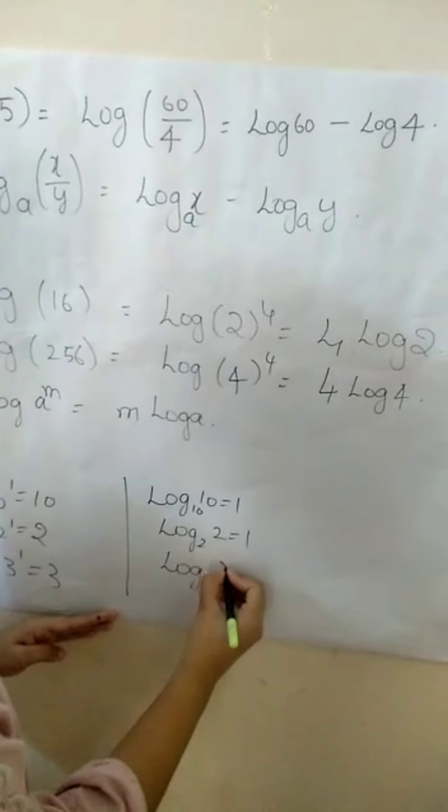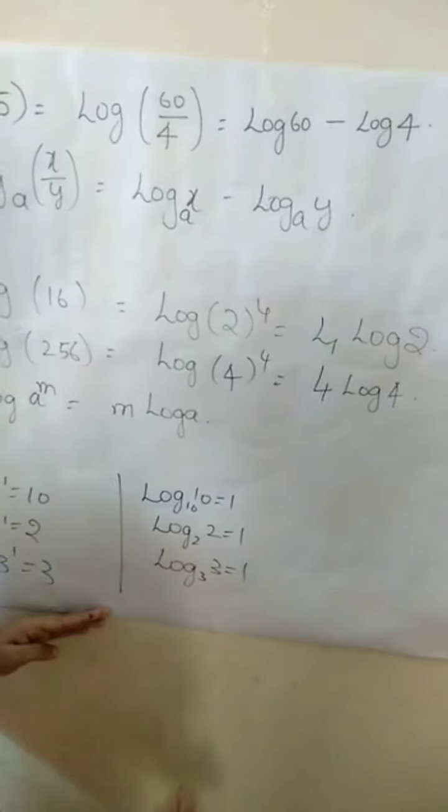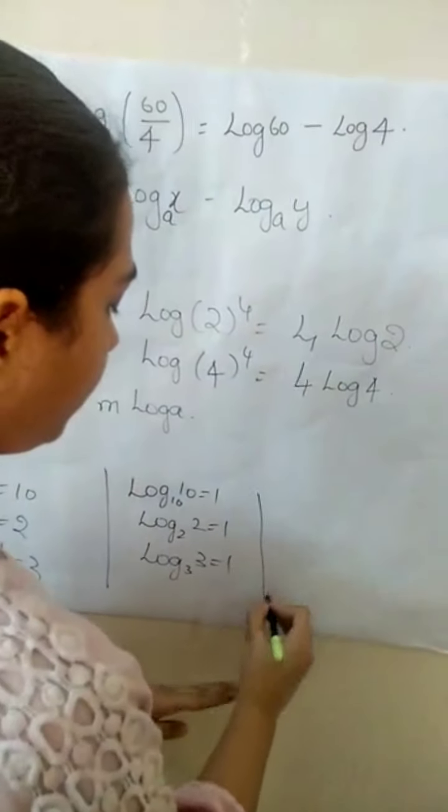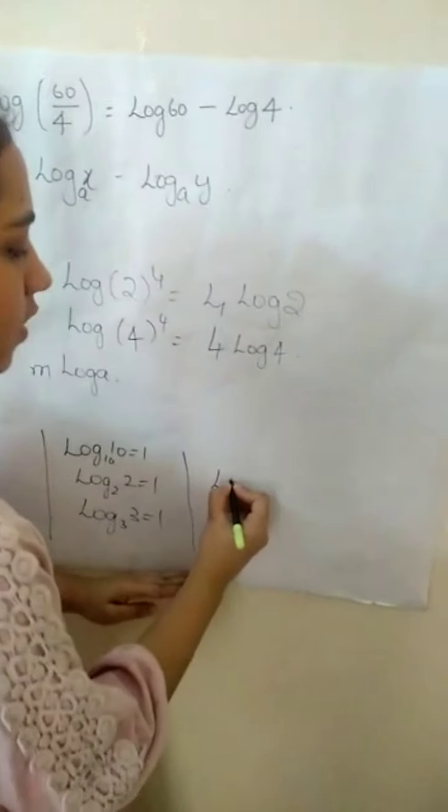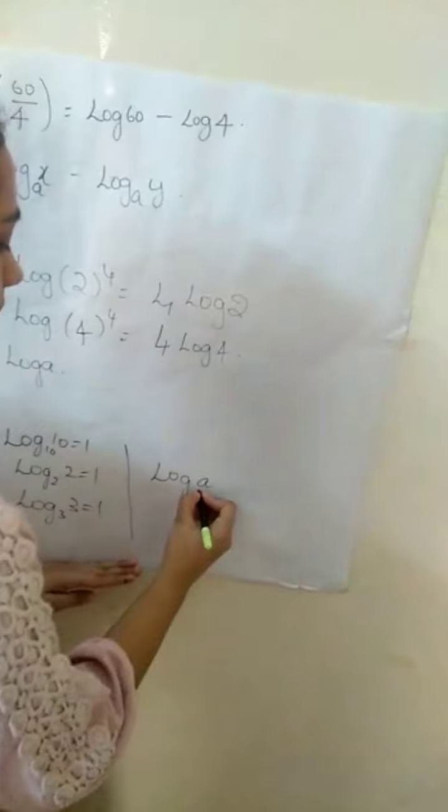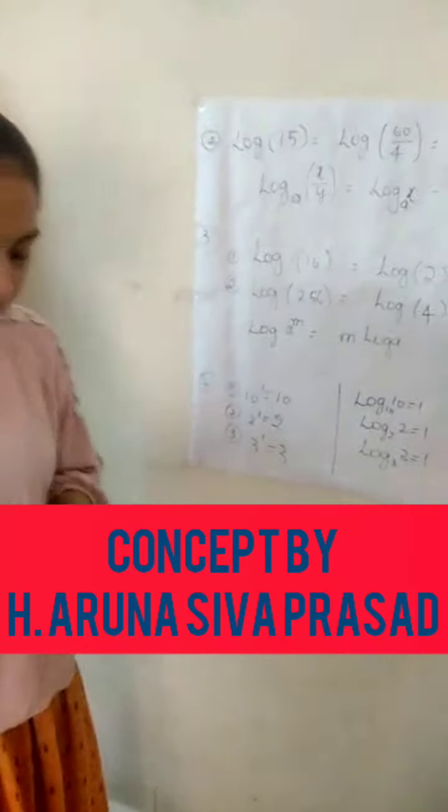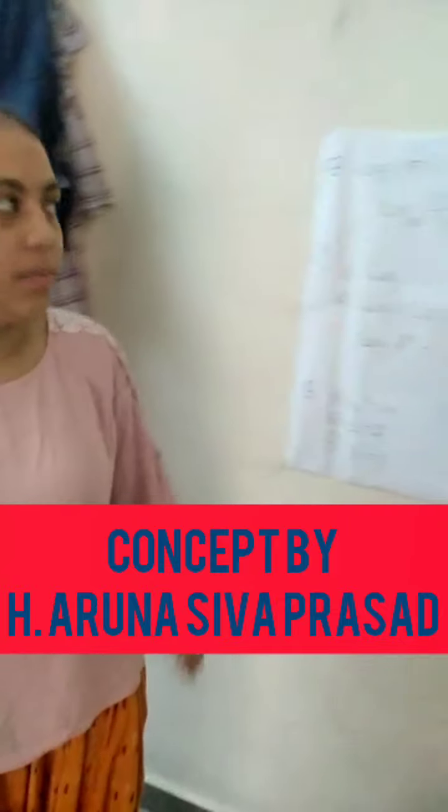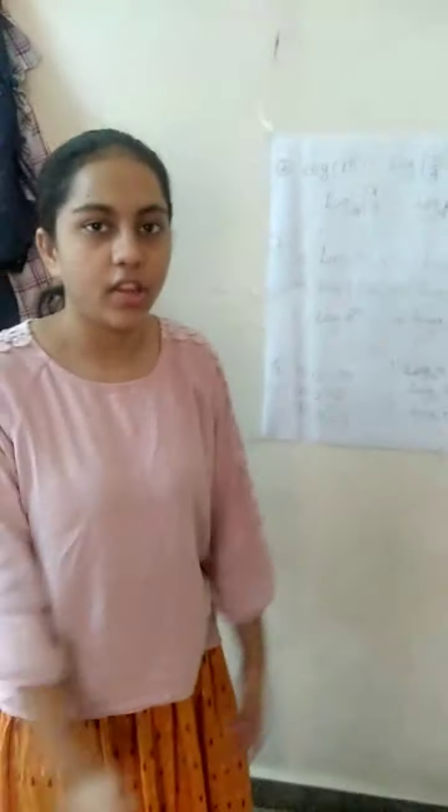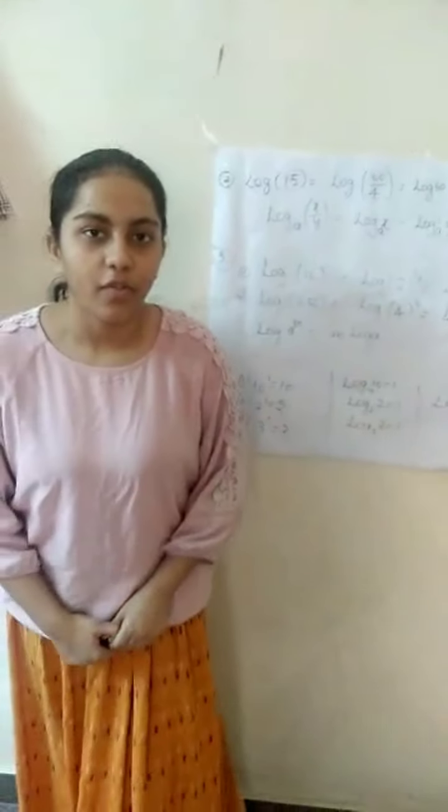From this logarithm chapter we conclude that logarithm is not applicable for negative values and zero, and it is applicable only for positive values. Thank you.